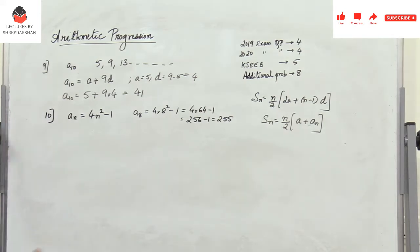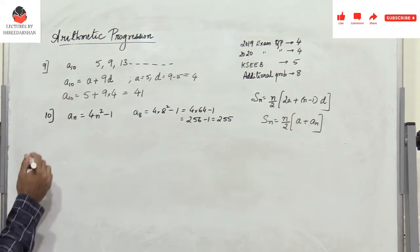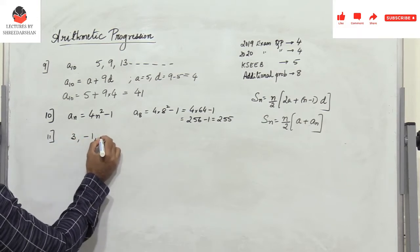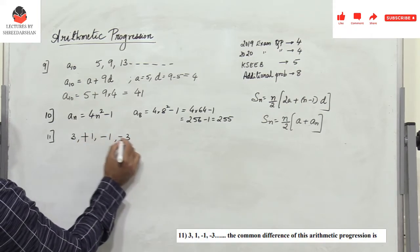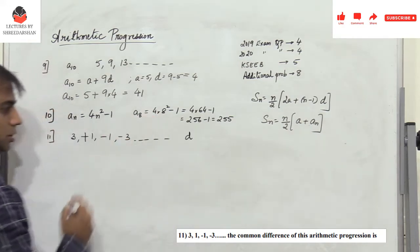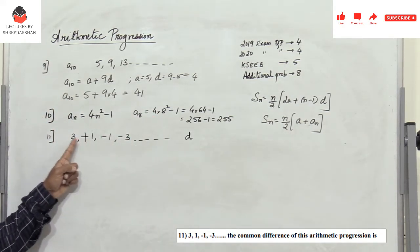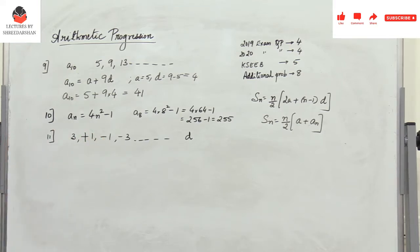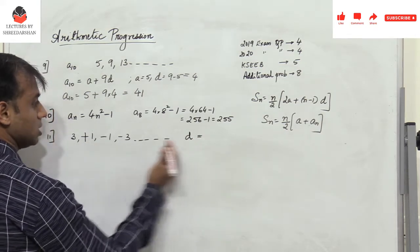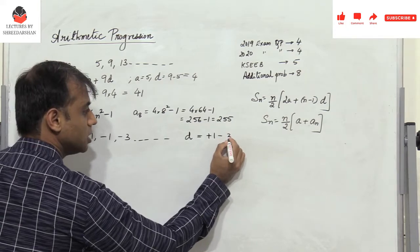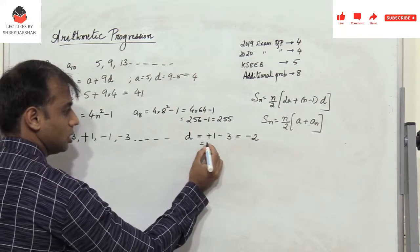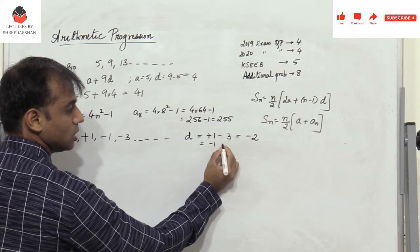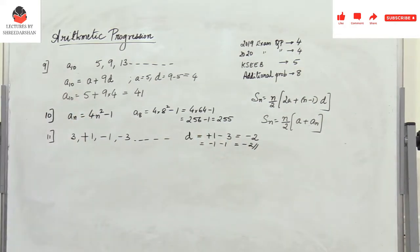Problem 11: the arithmetic progression is 3, 1, -1, -3, ... find the common difference d. The common difference is the second term minus the first term: 1 - 3 = -2. Verified: third term minus second term: -1 - 1 = -2. So the common difference is -2.